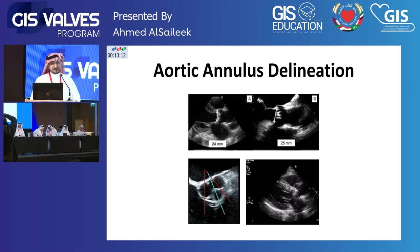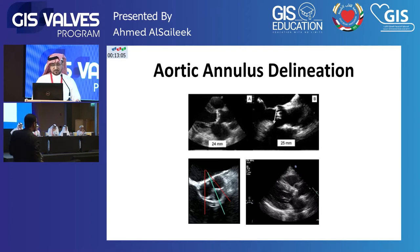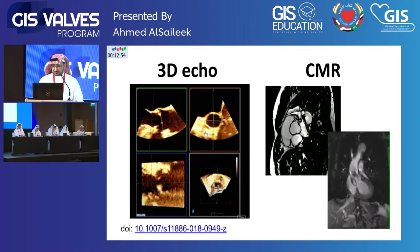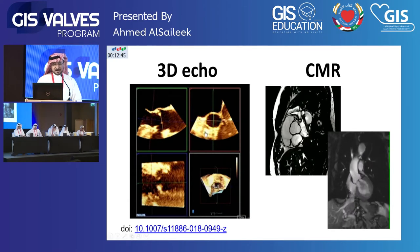The problem with echo is accurate delineation of some anatomical structures, especially the aortic annulus or aortic root anatomy. Being 2D, we cannot determine the best plane to measure the aortic annulus or the best view to see aortic valve morphology. 3D echo can help and improve assessment a little bit, but the lengthy post-processing and low spatial resolution make it less practical.